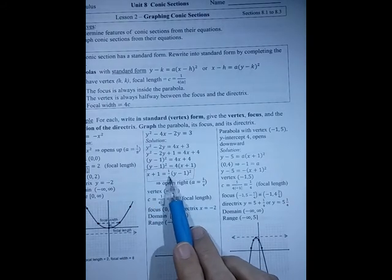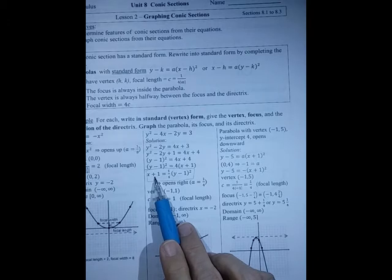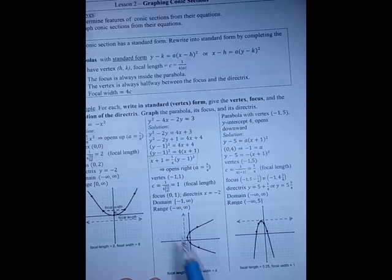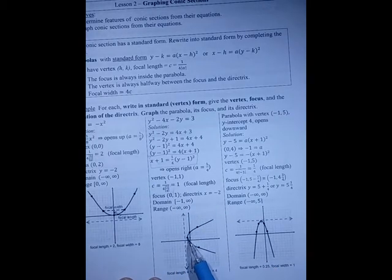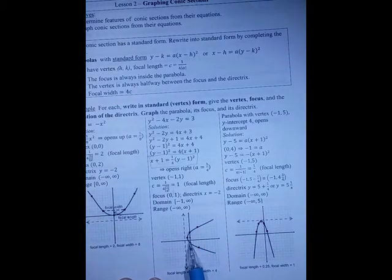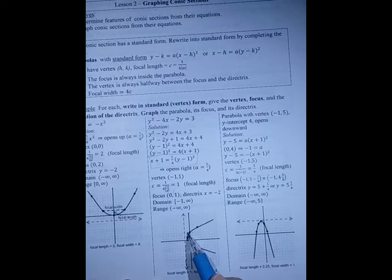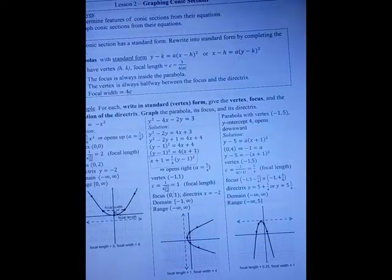The vertex is (minus 1, 1) and a is one-fourth. Because it's an x equation, it opens either right or left. A is positive, so it opens right. The focal length c is 1 over 4 times the absolute value of a, which equals 1, so the focus goes 1 to the right to be inside, giving focus at (0, 1). The directrix is 1 on the other side, so x equals minus 2. The domain is minus 1 to infinity, and range is negative to positive infinity. For other points, the focal width is 4 times 1, so go down 2 and up 2 from the focus.